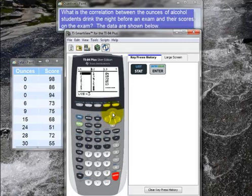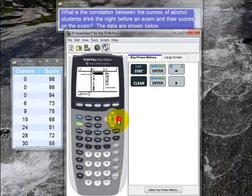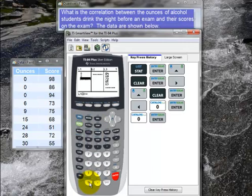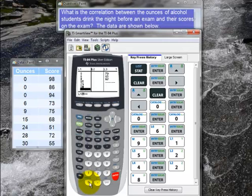Let's clear out L1 and L2. I go up to L1, hit clear and enter. I go over to L2, hit clear and enter. Then for L1, I'll let that be the ounces of alcohol. We have 0, enter, 0, enter, etc. Then finally I enter the last number, 30.